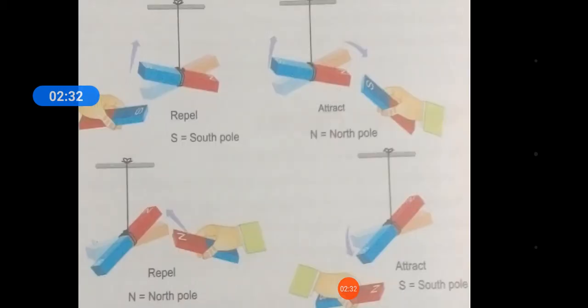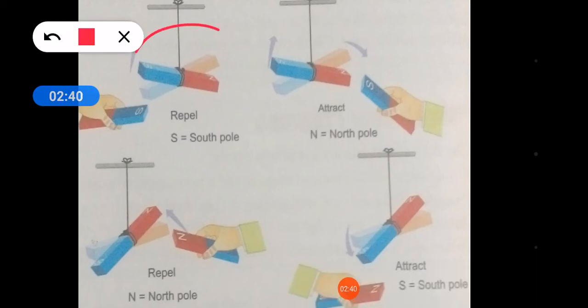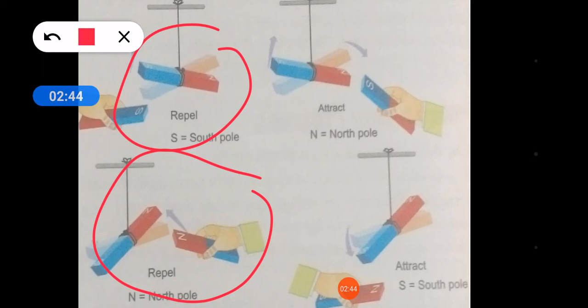So they have shown you the picture. If you place south pole with south pole, then they will repel each other. In the first diagram, they have shown the attraction when unlike poles are placed together.